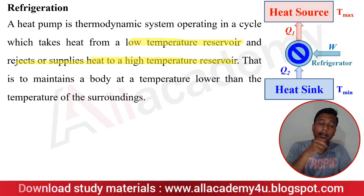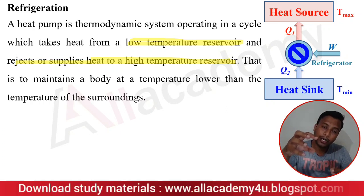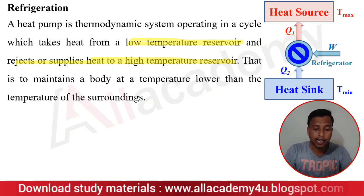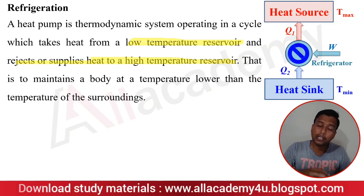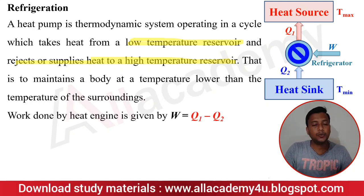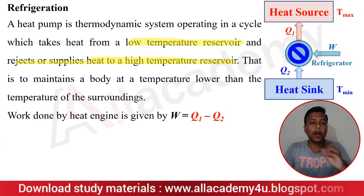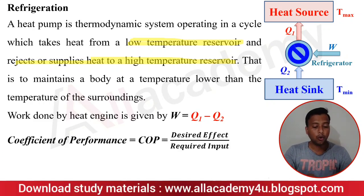Work has to be done on the system because we need to lift the lower-temperature heat to a higher-temperature reservoir. We know from basic heat transfer that heat always travels from a higher-temperature body to a lower-temperature body. In both the heat pump and the refrigerator, we are going against this natural principle — taking lower-temperature heat and supplying it to a higher-temperature body — and so extra work must be done. The work done is W = Q1 − Q2 in all three cases: heat engine, heat pump, and refrigerator.